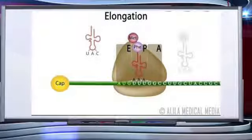The third phase of translation is elongation. There are two sites in the large subunit: the P site and the A site, for subsequent amino acids to bind and be close to each other for the formation of peptide bonds. The small subunit with the tRNA attaches to the large subunit such that the initiation codon AUG comes to the P site. The mRNA also has some additional sequences that are not translated.